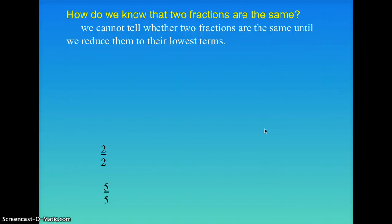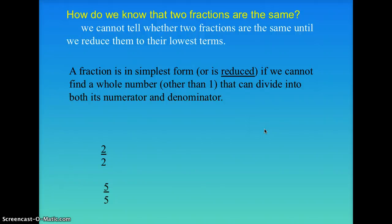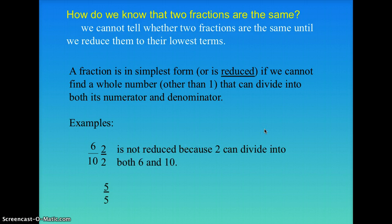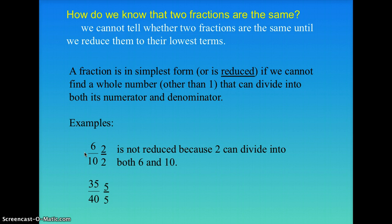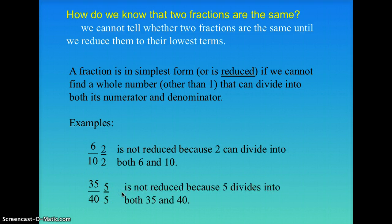How do we know that two fractions are the same? We cannot tell whether two fractions are the same until we reduce them to the lowest terms. A fraction is in simplest form when we can't find a whole number, other than one, that we can divide into both the numerator and the denominator. So if I had six-tenths, it's not reduced because two can divide into both ten and six. So I can make the fraction two over two — which is really just one whole — and divide by that, giving me three-fifths, which is equivalent to six-tenths. Same thing with 35-fortieths: I can divide both top and bottom by five. Five over five is basically the magic number of one. If I divide 35 by five I get seven, and 40 by five I get eight — so that would be seven-eighths.